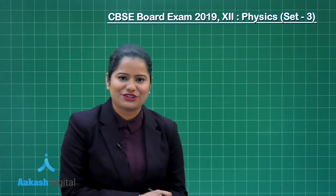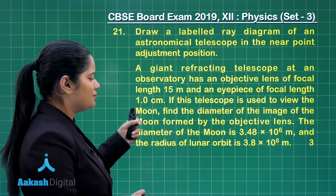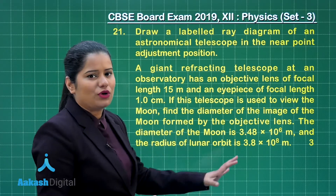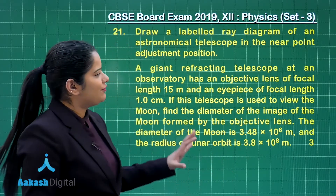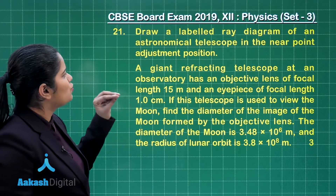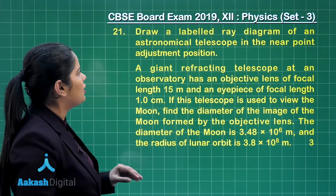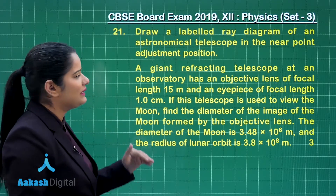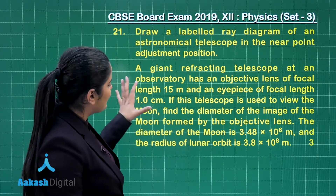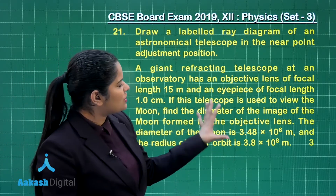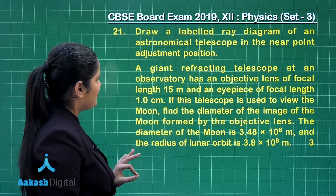Let us have a look at the discussion for question number 21. This question also holds three marks. In the first part of the question you need to draw a labeled ray diagram of an astronomical telescope in their near point adjustment position, and then we are given a numerical to solve that we will be reading later on.